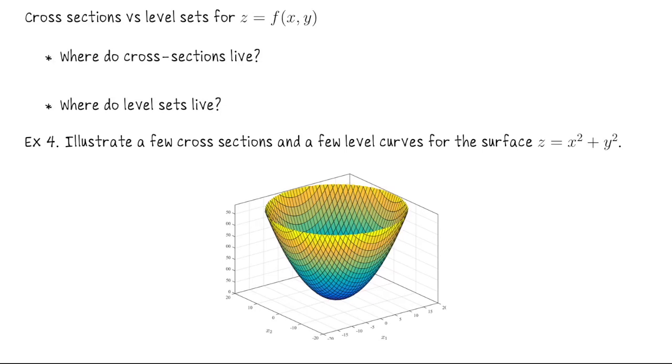Okay, let me summarize the difference between cross sections and level sets for functions of the form z equals f of x and y because I think sometimes students get these two notions confused. So where do cross sections live? When we say we're grabbing a cross section, what kind of picture are we drawing? And the answer is that cross sections live on the graph of the function. So if our function is a function of two variables, then when we draw a cross section we're drawing a picture in R3. That's where the graph of the function is.